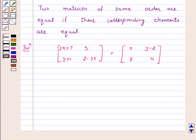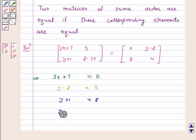this will imply that 3x plus 7 must be equal to 0. Again, y minus 2 must be equal to 5 and y plus 1 must be equal to 8 and 2 minus 3x should be equal to 4.